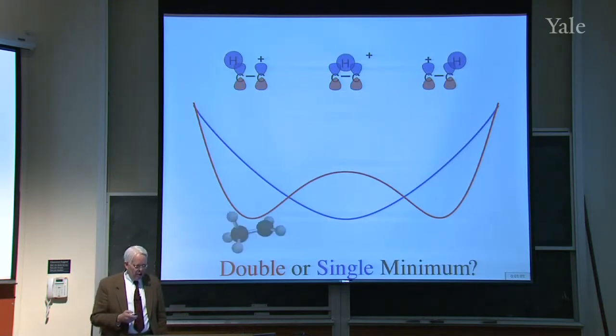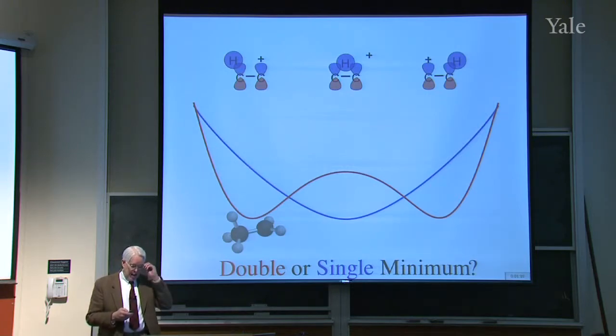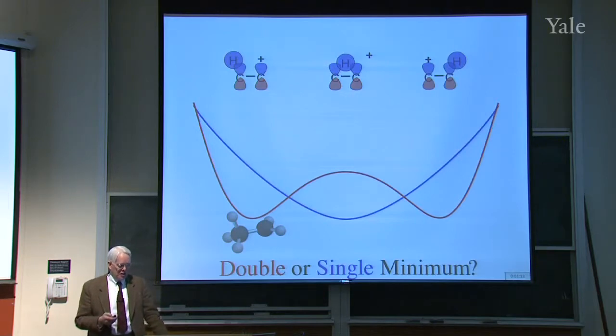Do you have two normal cations which have a transition state between them that's not too high because it has this three-center, two-electron bond? Or might the bridged structure be the lowest energy structure, a single minimum? You can do simple calculations to check this.